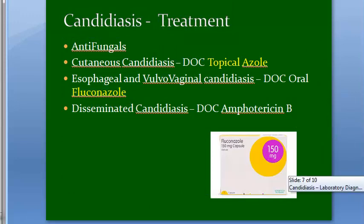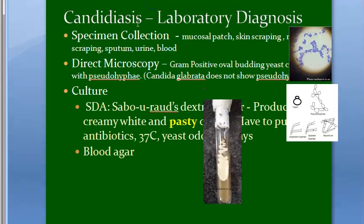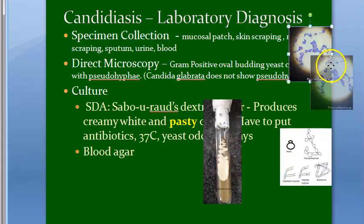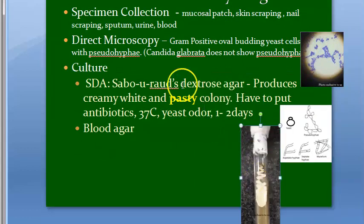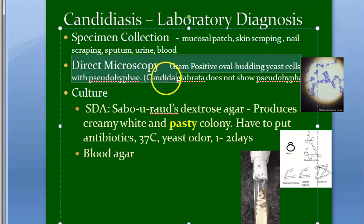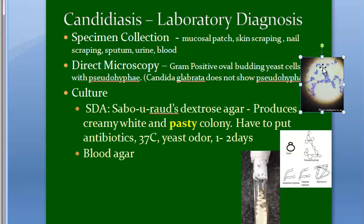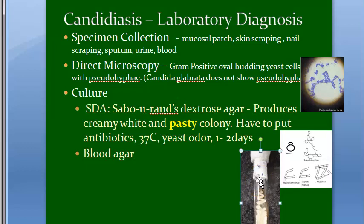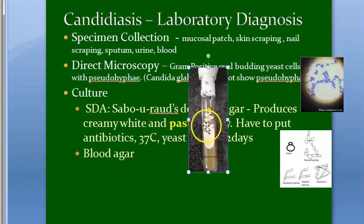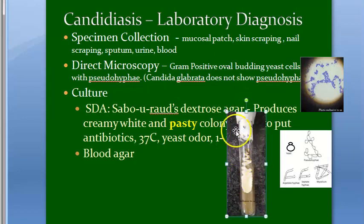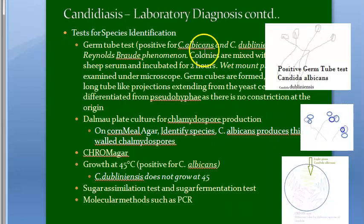To recap the lab diagnosis of candidiasis: specimen collection includes mucosal patch, skin scrapings, nail scrapings, sputum, urine, and blood. Direct microscopy shows gram-positive oval budding yeast cells with pseudohyphae — Candida glabrata does not show pseudohyphae. Culture on Sabouraud Dextrose Agar produces creamy white pasty colonies with yeast odor within one to two days at 37°C with antibiotics added; can also grow on blood agar.